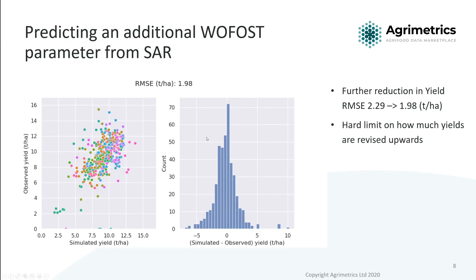After adding and optimizing the CVO parameter, we can see that the root mean squared error has reduced to sub two tons per hectare, and our simulated and observed yields are showing a better linear correlation with each other.